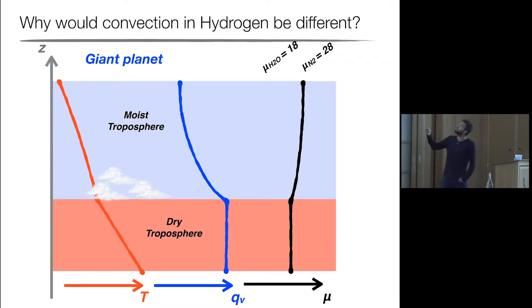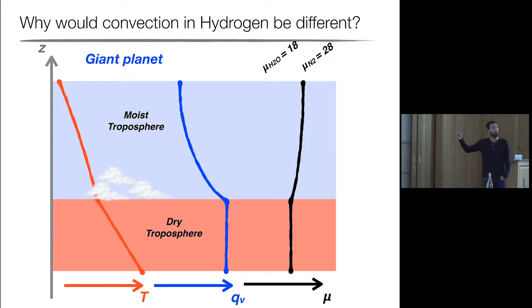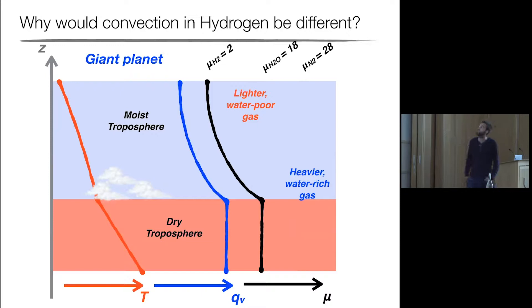What is really, really different is that whereas on Earth we had nitrogen as the background gas, now we have H₂. H₂ has a mean molecular weight of 2 — it's tiny, 10 times lower than water's 18. So you can have a huge gradient of mean molecular weight. But the mean molecular weight gradient now goes the wrong way: you have lighter, water-poor gas on top of heavier, water-rich gas. So you have a competition between radiation, which wants convection to occur, and this process that tries to suppress that convection.